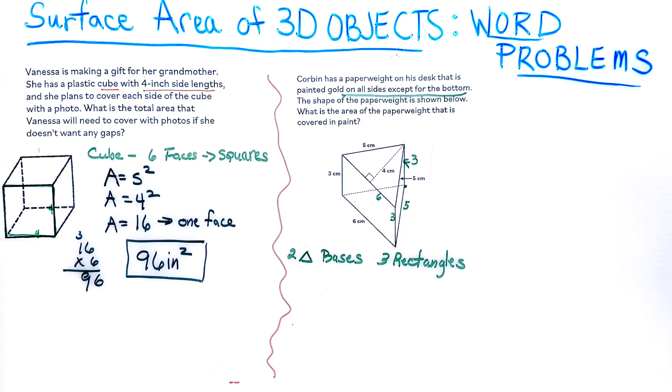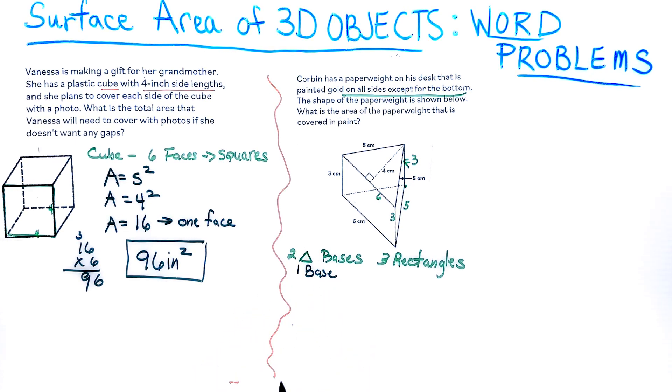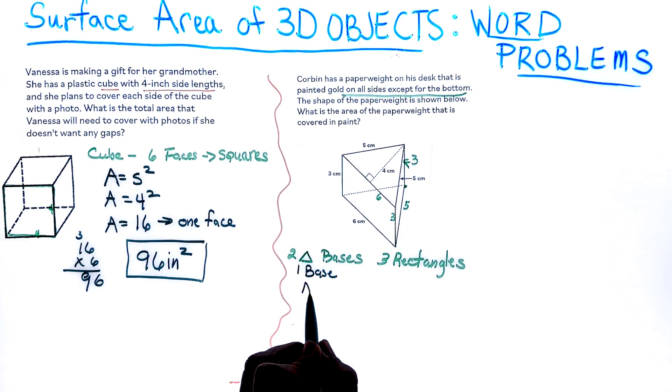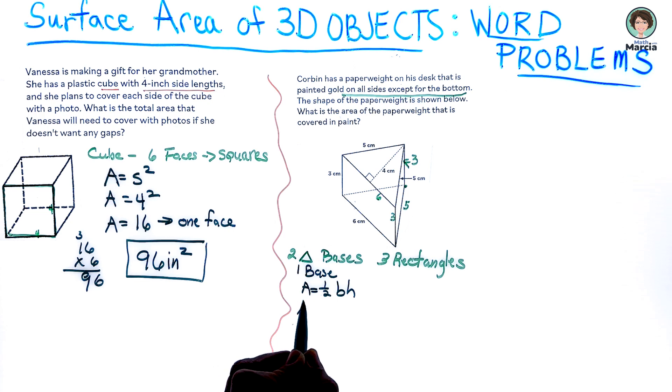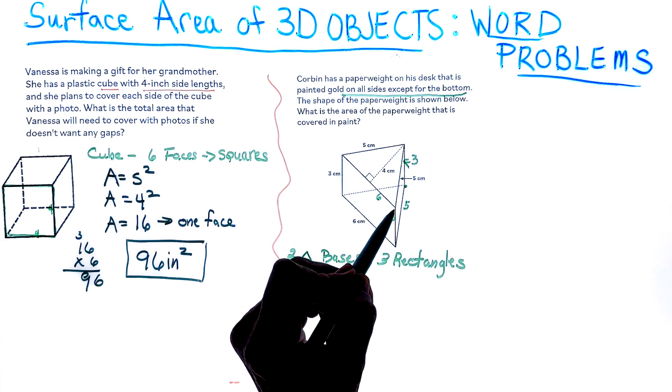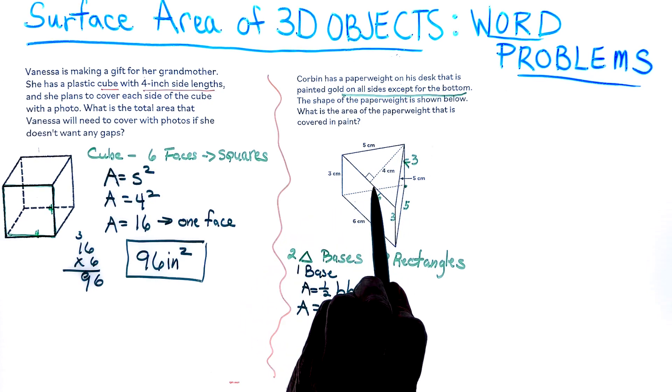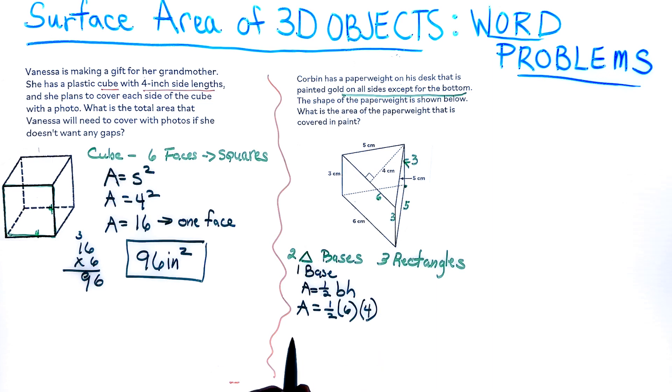Let's start off with our triangle. For the triangle, I know the formula. Even though there's two up there, we only need one base because the bottom will not be painted. Area equals one-half base times height. Area equals one-half of 6 and the height of the triangle is where it hits at 90 degrees, which is 4. One-half of 6 is 3, and 3 times 4 is equal to 12.